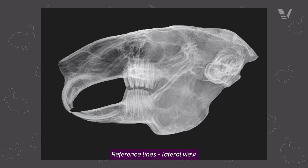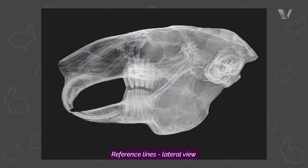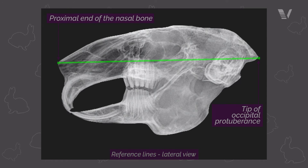When evaluating the radiographs of the skull and putting those lines on to look for dental malocclusion, there are a few different landmarks that we're going to use.